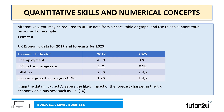Alternatively, you may be required to utilize data from a chart, table or graph to support your response. On screen we can see extract A, which is UK economic data for 2017 and forecasts for 2025 — covering unemployment, the exchange rate dollars to pounds, inflation, and economic growth. A possible question could be: using the data in extract A, assess the likely impact of the forecast changes in the UK economy on a business such as Lidl — 10 marks.